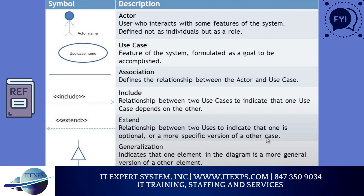Let's look at other refinements of relationships. The include relationship symbol represents that one use case is dependent on another use case. For example, in order to buy an online product, the user needs to be logged into that website first. The extend relationship can be applied in two situations: either when one use case is optional, or when one use case is a specific version of another, for example, having the option of making a payment through credit card or using an online payment method such as PayPal or Apple Pay. Finally, there's generalization, which is used to indicate if an element in the system is a generic version of another element.